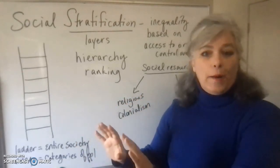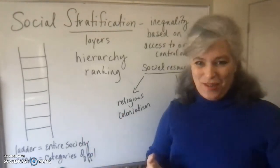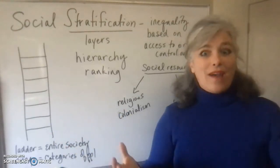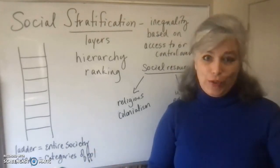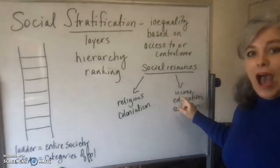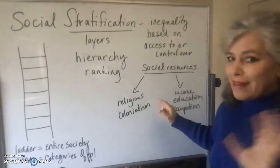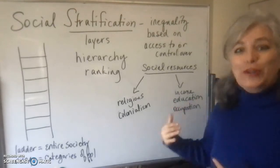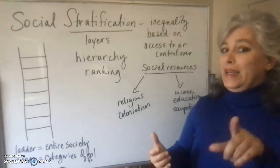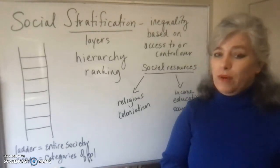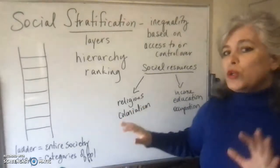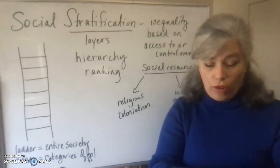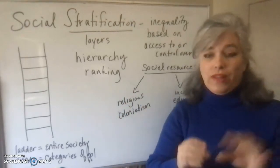Social mobility also affects outsiders' opinion of the USA. Why is the USA attractive to so many people born outside it? Because we have this idea that you can work to improve your situation in life — an open system of social mobility based on achieved statuses that everyone supposedly has the right to improve. Other societies, though, have what's called a closed system of social mobility, which is usually based on ascribed statuses — assigned at birth — so you have no control over society's label placed on you.